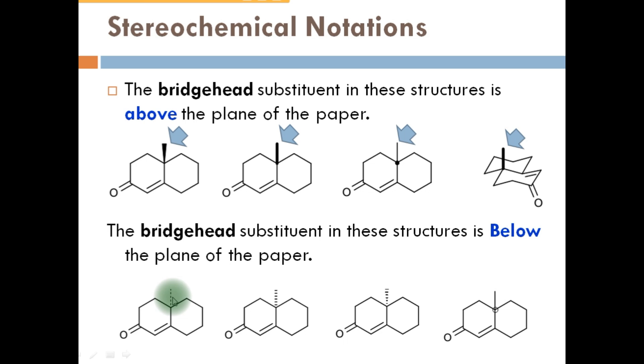When the bridge substituent is shown by dashed wedges like structure, this is known as below the plane. These arrows show below the plane of the paper.